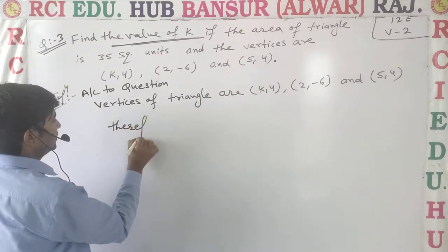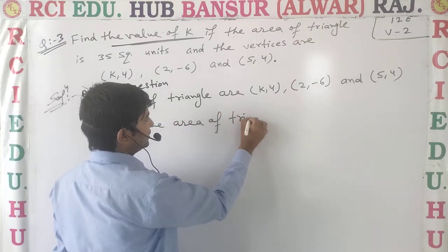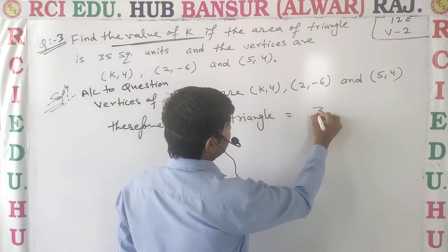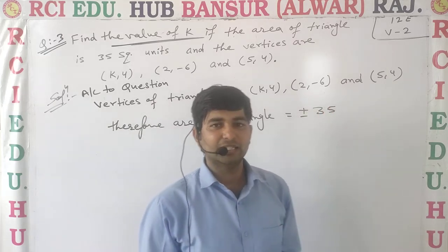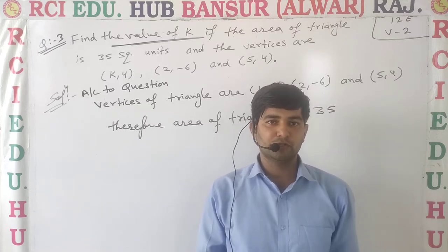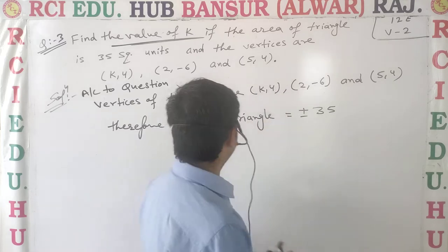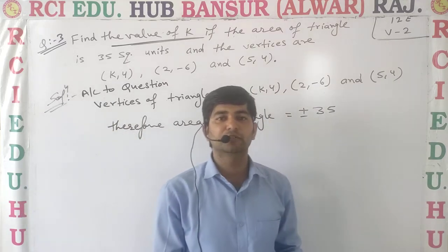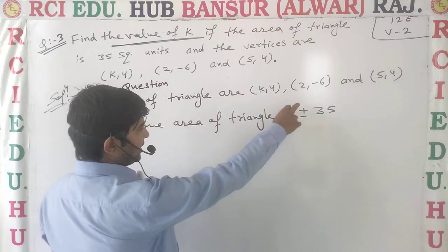Therefore, the area of the triangle is equal to 35. The area formula gives us plus or minus, which is why the value of K can be positive or negative. This is why it is plus minus.